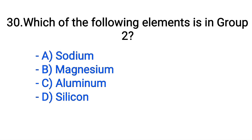Question number 30. Which of the following elements is in group 2? Option A: Sodium. B: Magnesium. C: Aluminium. D: Silicon. The correct answer is option B, Magnesium.